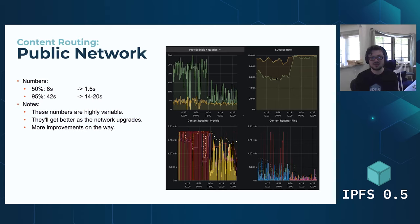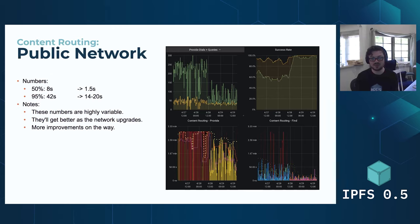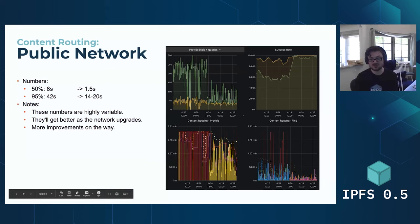If you look at the graph in the upper right hand quadrant, before the green there is the number of provides that finished and actually succeeded, and the top is the number of finds that succeeded. The provides are the announcement saying 'I have the content,' the finds are the query network trying to find the content, and on the right you can see that it basically went to 100% on both sides. In the bottom left quadrant, content routing announcements were basically timing out — now they're actually finishing. And in the bottom right quadrant, before it was taking quite a bit longer to resolve content.